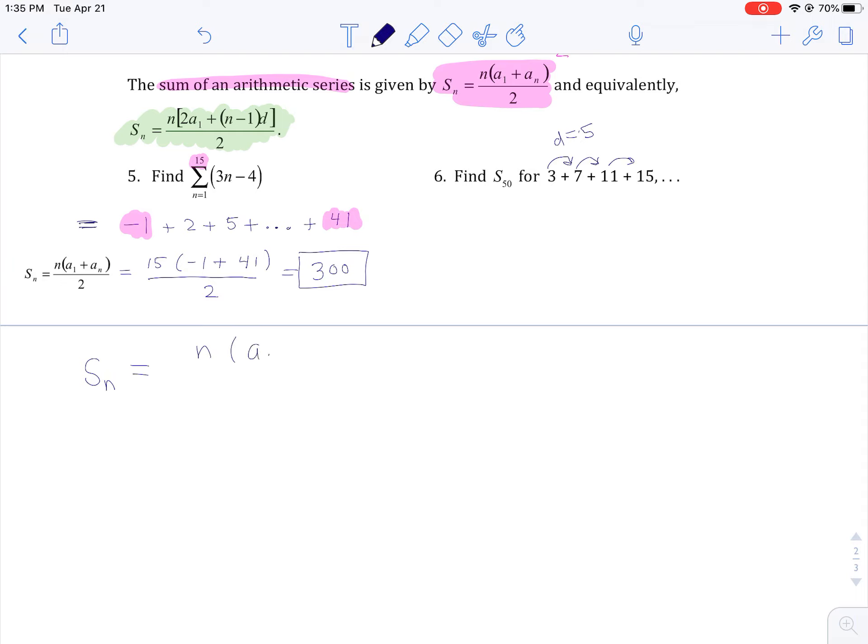So if you look at Gauss's formula for the sum of an arithmetic series, one of the things we learned with sequences is we can rewrite the nth term. The nth term of an arithmetic series is the first term plus the common difference times n minus 1. So what we can do is we can take this and plug it in for a sub n, just by using substitution.